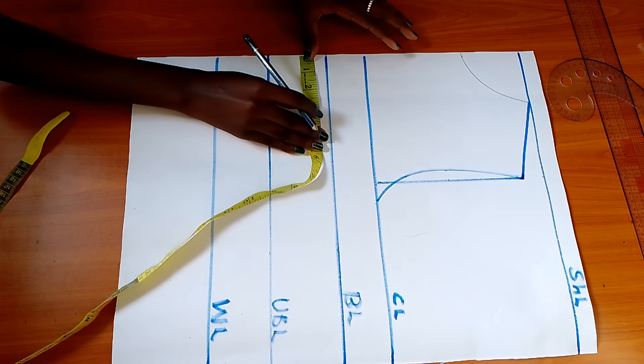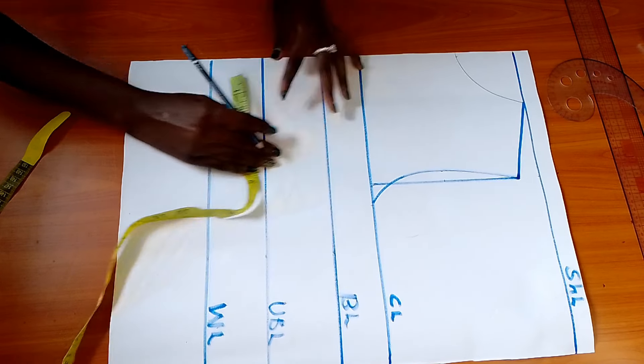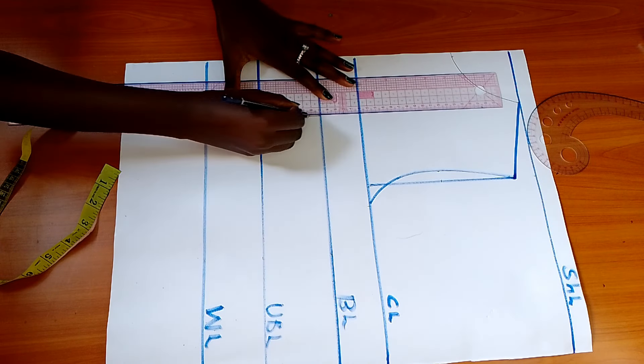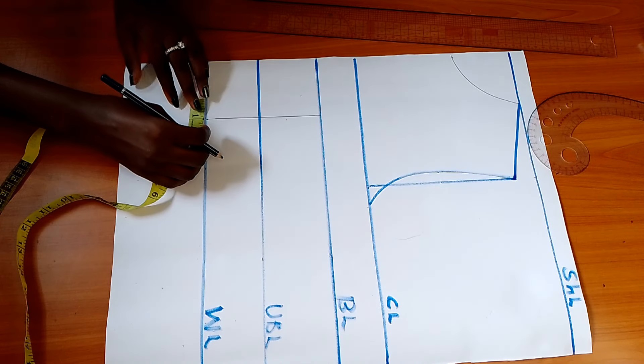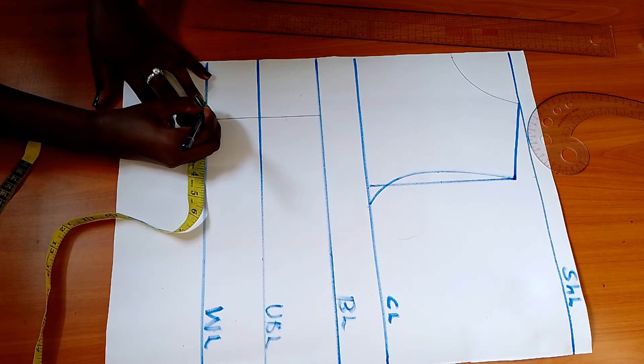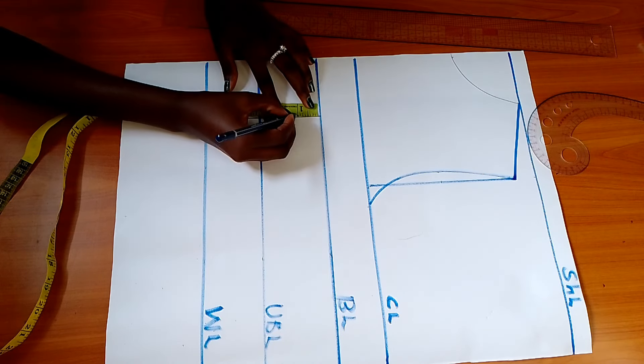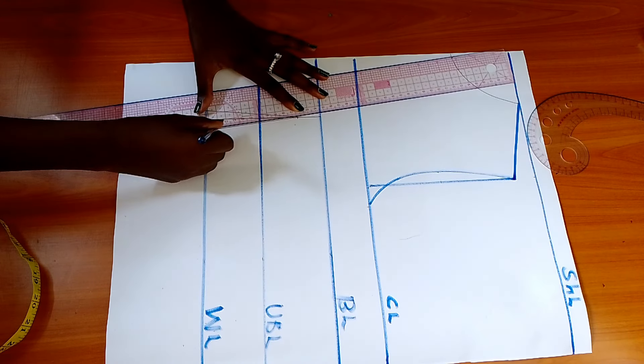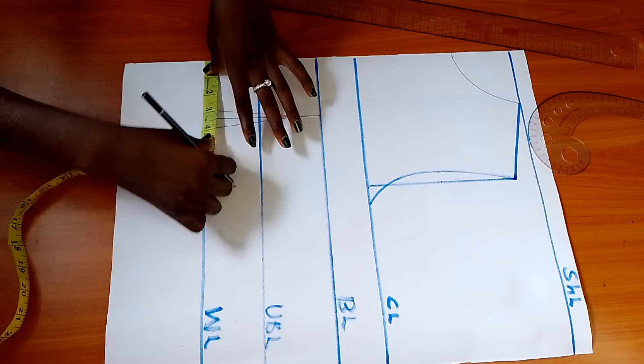Next I'm going to add the dart. Measure half burst span inwards from center front on waist line and repeat same measurement on the bust line. These marks will help me draw the dart line. Measure the dart width of one inch, that's 0.5 inches on each side of that line. Still on that line, go down by one inch from bust line and mark that apex.